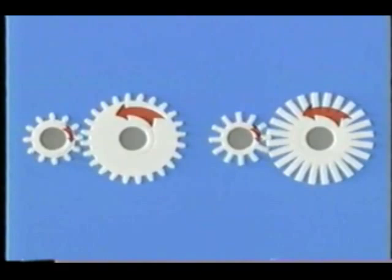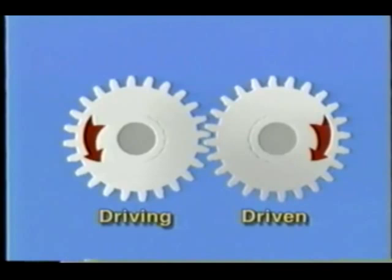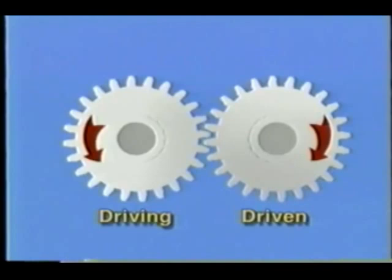Now that you have seen the types of gears found in transmissions, let's look at how these gears work. Gears are just circular levers. Because of the differences in their diameter, they are used to change torque and rotation speed. Here we see two gears in mesh. They are the same diameter and have the same number of teeth. Since each gear is the same size, they both rotate at the same speed and with the same amount of torque. This is a one-to-one gear ratio.